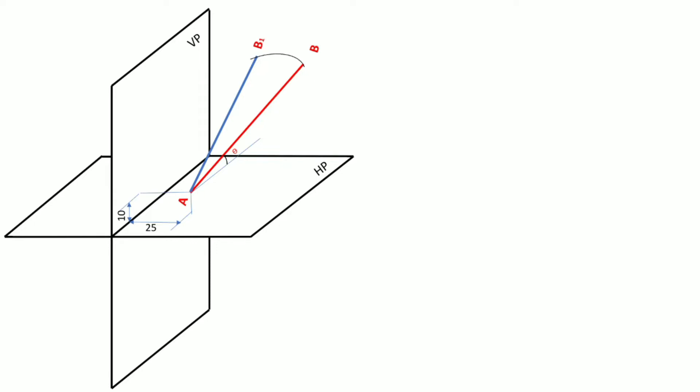We will name this new line AB1. If we project line AB1 on the vertical plane, looking in the observer direction, we get the projection of line AB1 on the vertical plane as A'B1'. So the projection we are getting is A' and B1'.